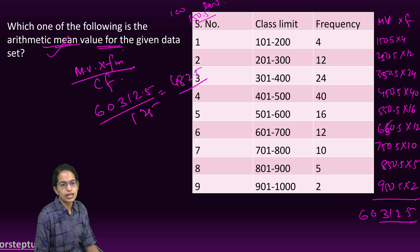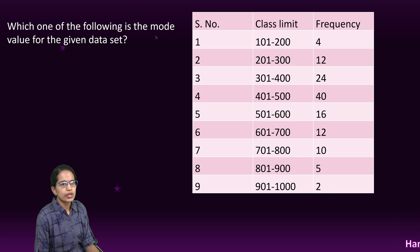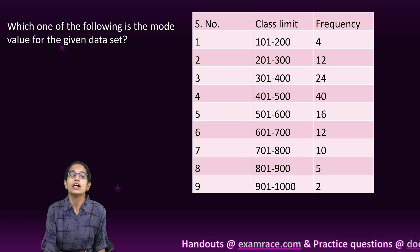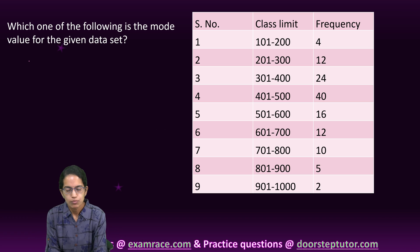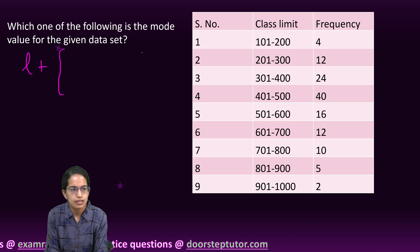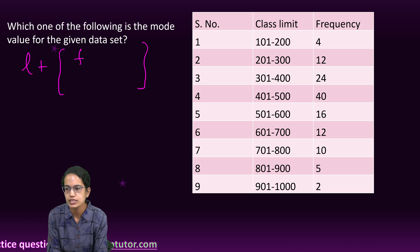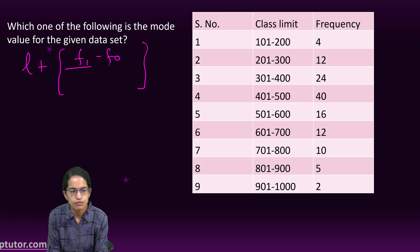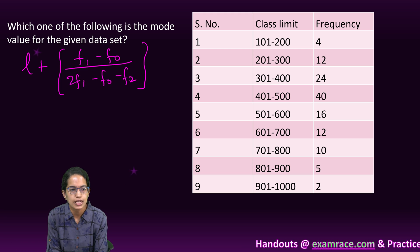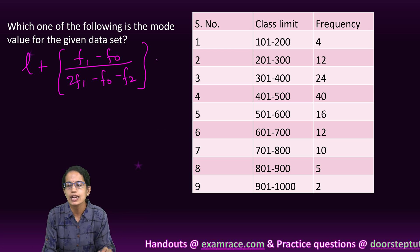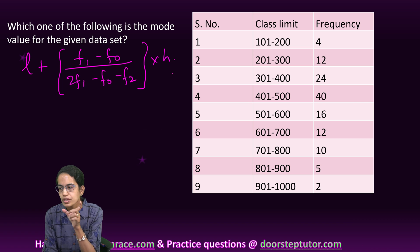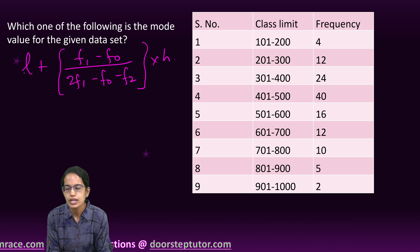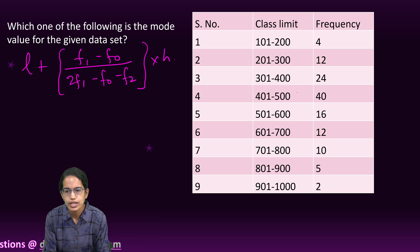So the arithmetic mean is 482.5, meaning it lies in that range. The next question: which of the following is the mode value for the given set of data? For grouped data, mode is calculated as: lower limit of the modal class plus [(f_modal − f_preceding) ÷ (2×f_modal − f_preceding − f_succeeding)] × h, where h is the class interval.